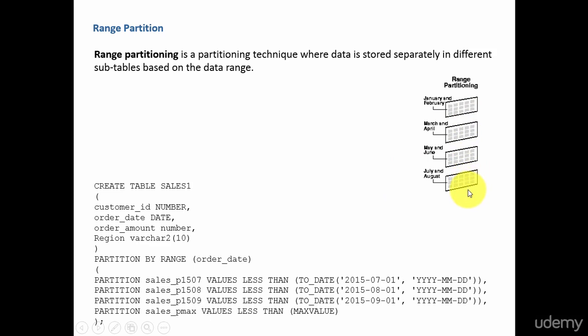I want to divide my data based on the sales month. All my January and February month I want in one partition, March and April in one partition, May and June in one partition, July and August in one partition, September and October in one partition, November and December in one partition. That means I am dividing my yearly data into six partitions. Or if you think your data is really huge, then you can divide your data into 12 partitions, like January, February, all the way to December. Each partition holds a month's worth of data.